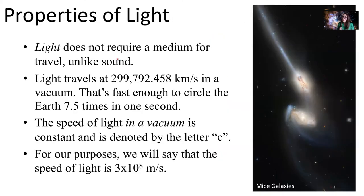Here are a couple of important properties of light. Light does not require a medium for travel. You do not have to have material for light to move through. Light can travel through a vacuum, through air. That's different from sound, which travels by compressing air, and that compressed air makes compressions in our eardrums — that's what we hear. Light doesn't need a material to move through; it can move through empty space.